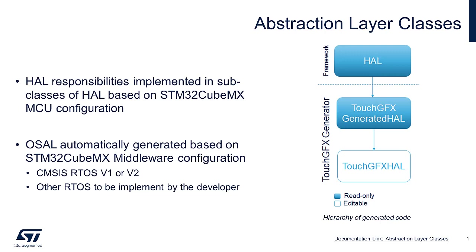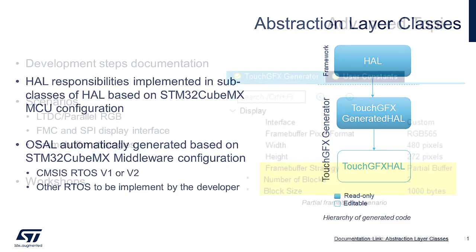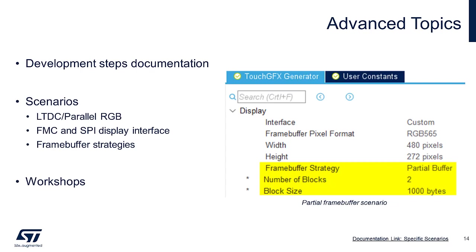The common architecture of the hardware abstraction layer is shown in this figure. Changes through user code can be made in the file called TouchFX HAL for this example, like the number of frame buffers used and their addresses. The abstraction layer classes are further explained in the related articles in the documentation.